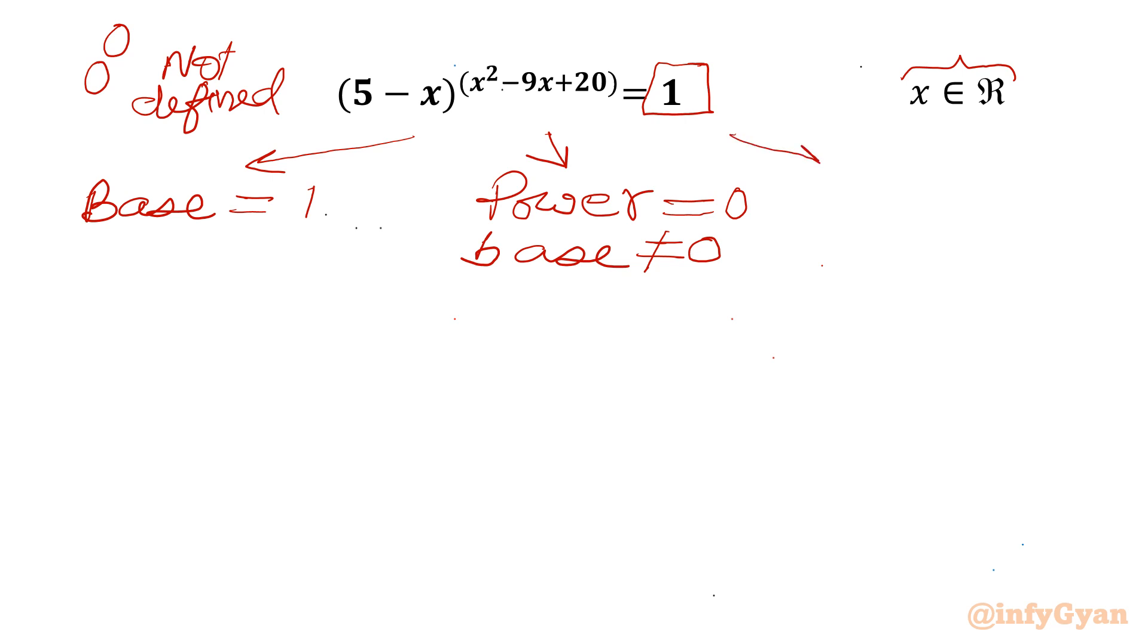Now third case is also there, where base is negative 1 and power is even. So minus 1 raised to the power 2, 4, 6, 8, 10, we will get always RHS 1.